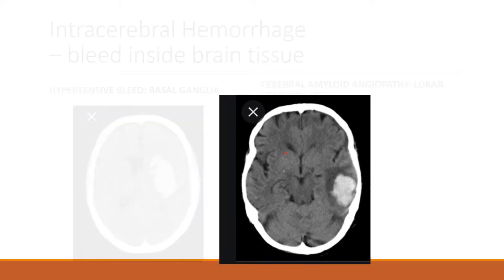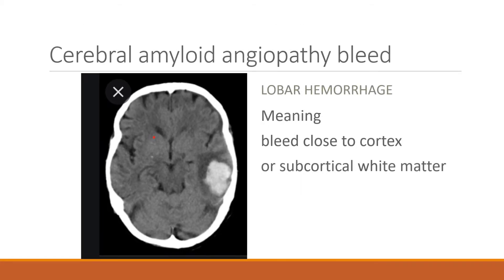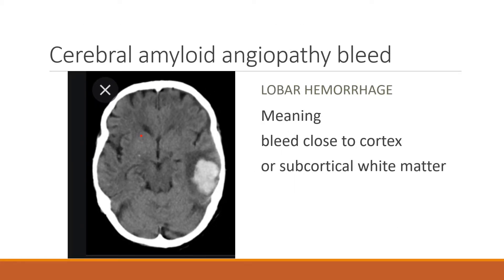Let's take a look at this CT scan. Lobar hemorrhage means the bleeding is close to the cortex or subcortical white matter.